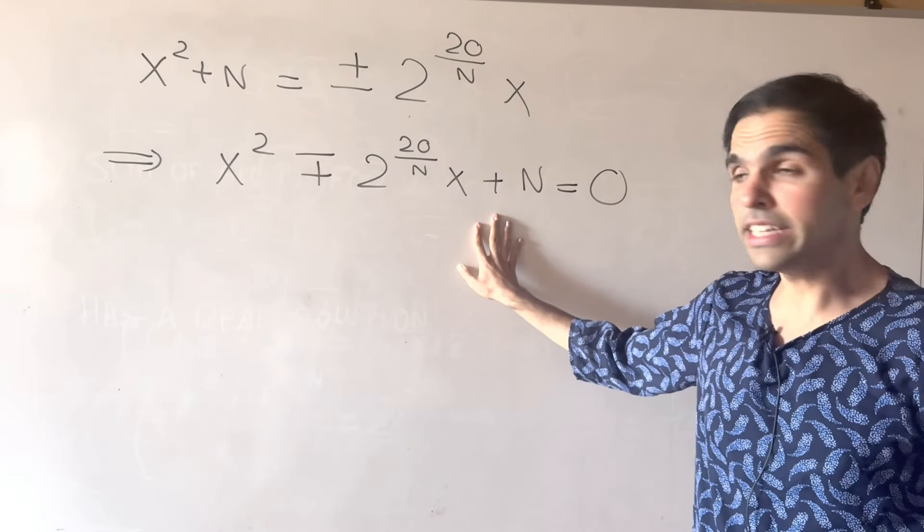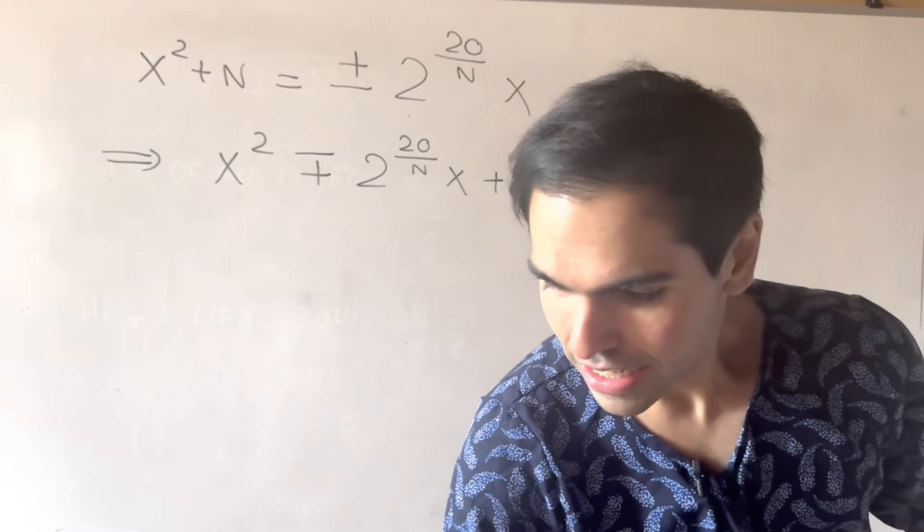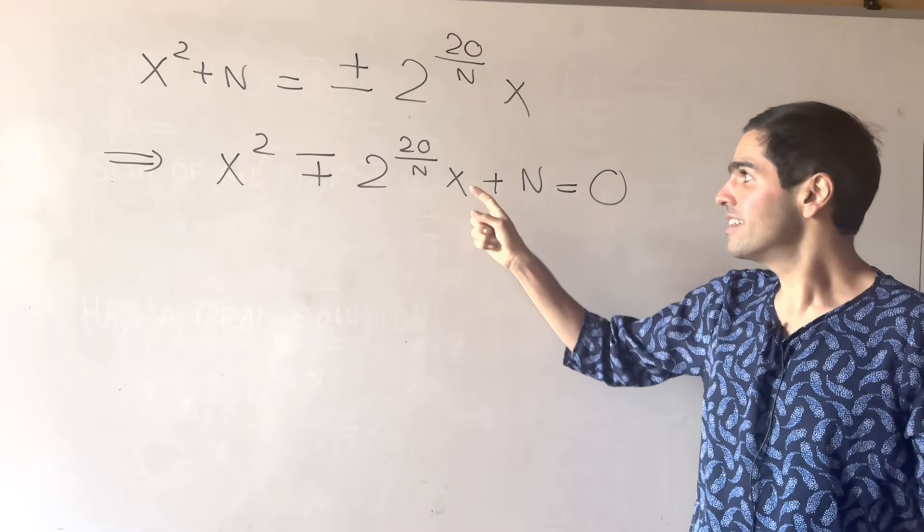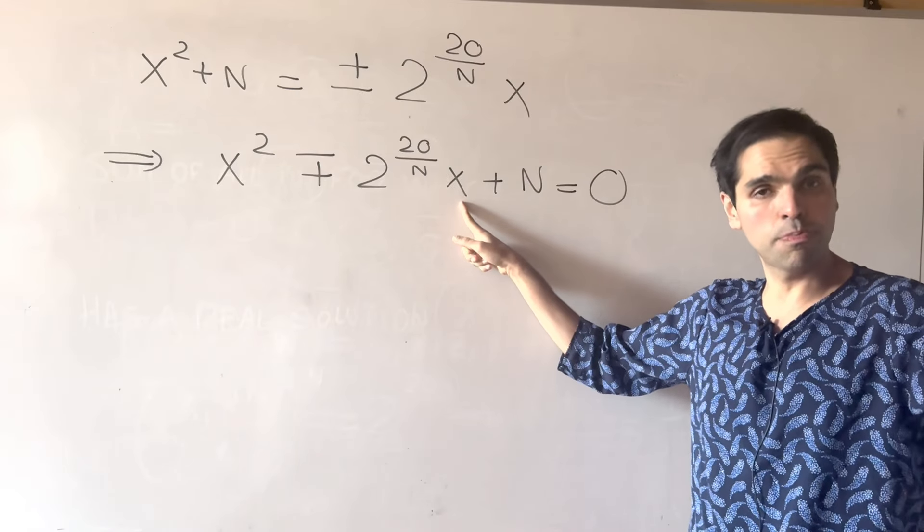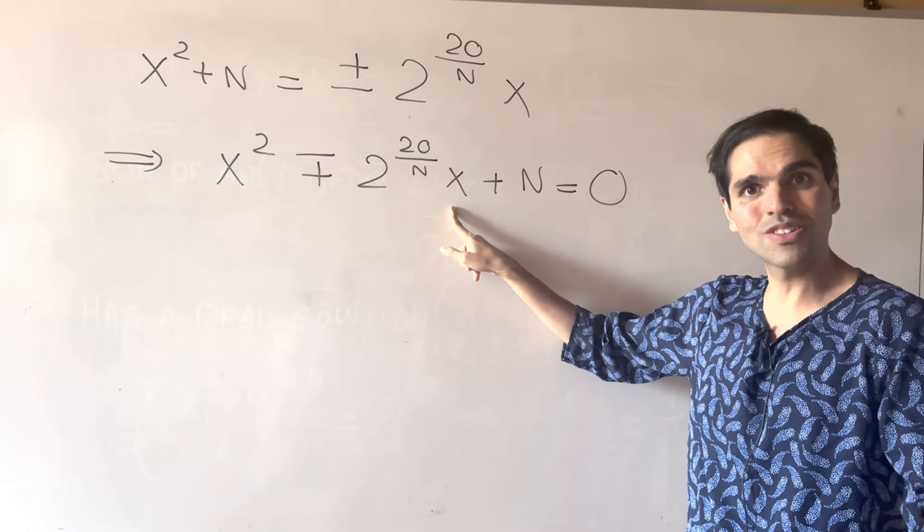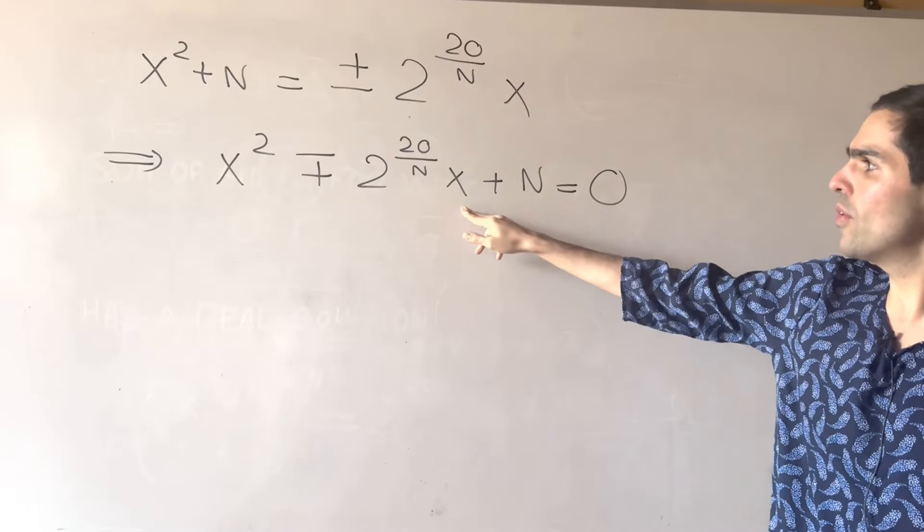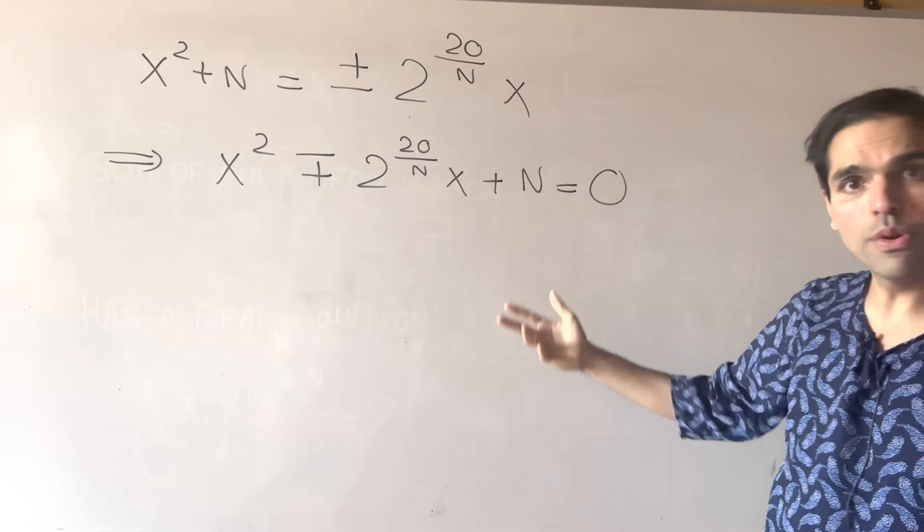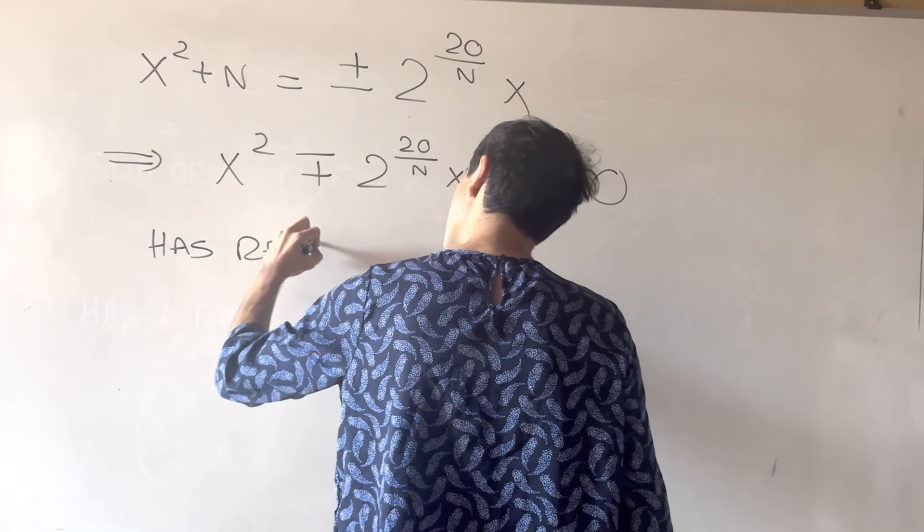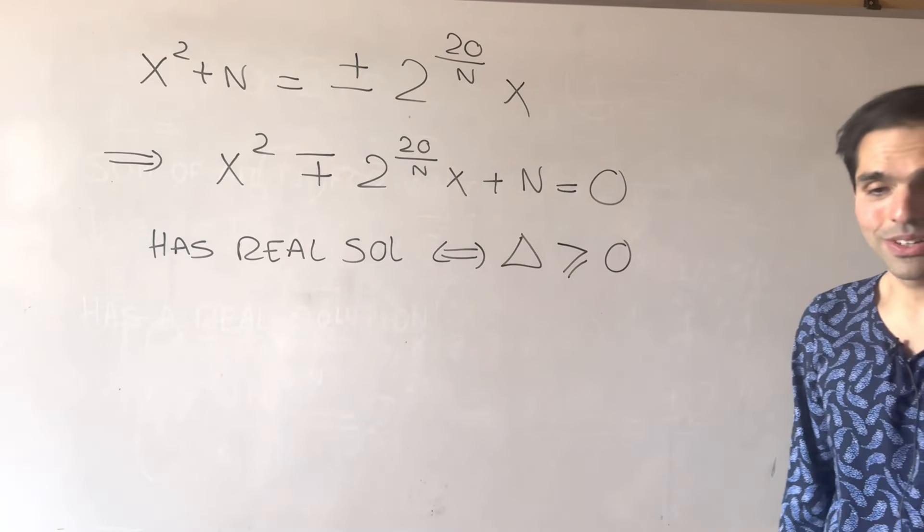And the question is really, when does this have a real solution? Now, if you remember from quadratic equations, if the discriminant is positive, you have two real solutions. If it's zero, you have one real solution. If it's negative, you have complex solutions. So in other words, this has real solutions if and only if the discriminant is greater or equal to zero.